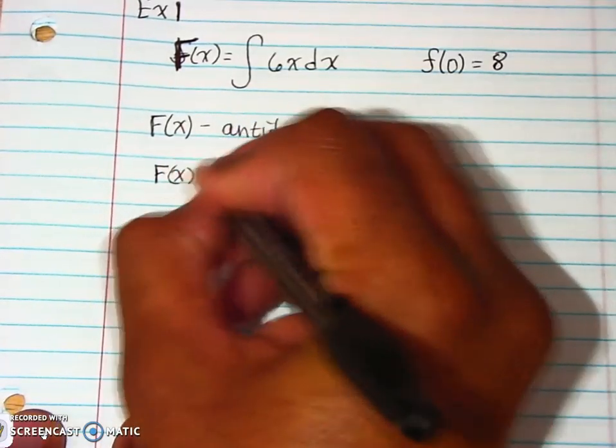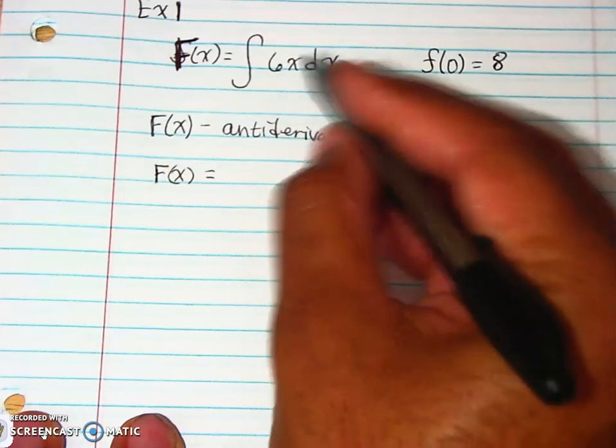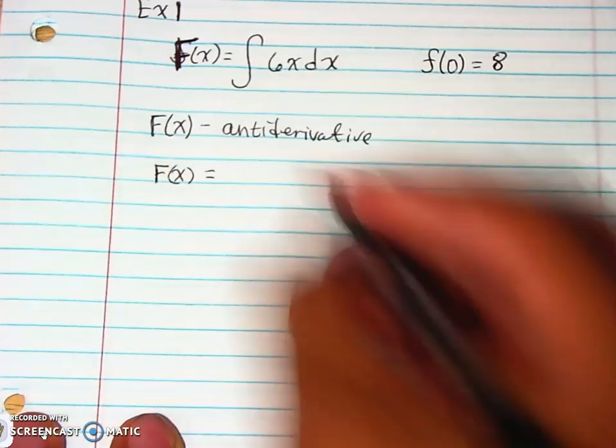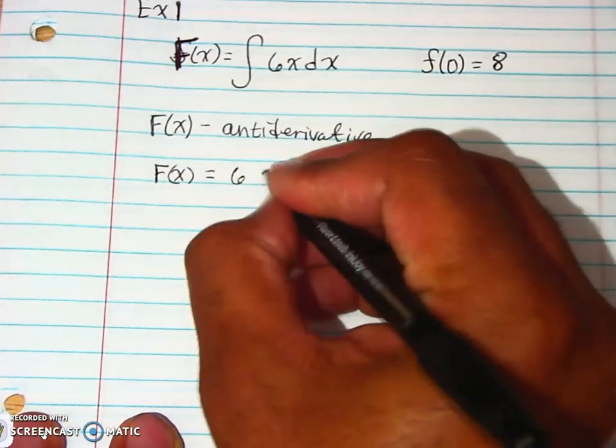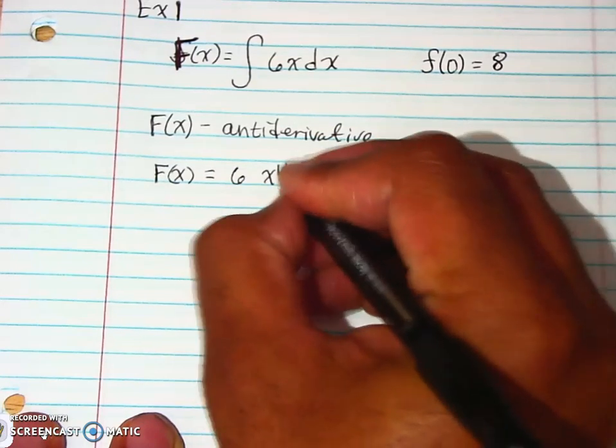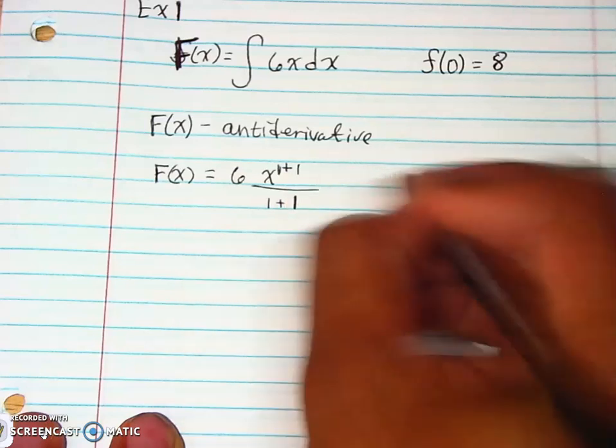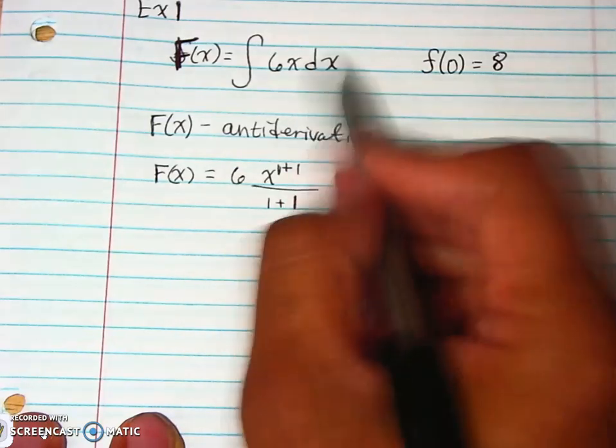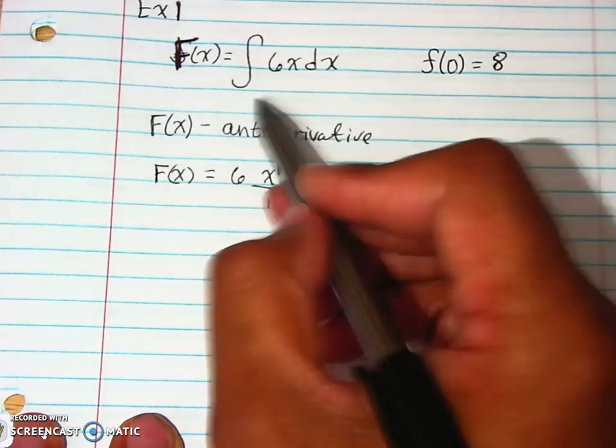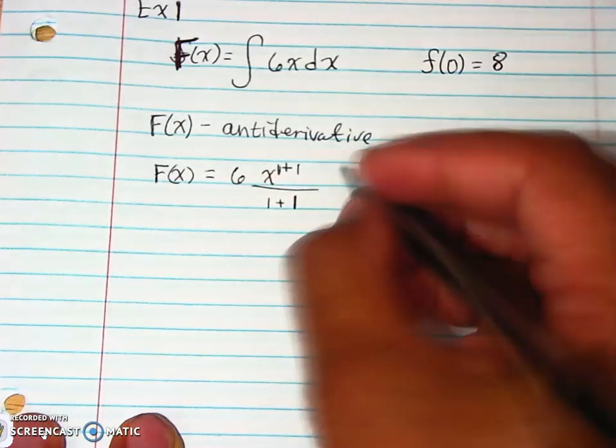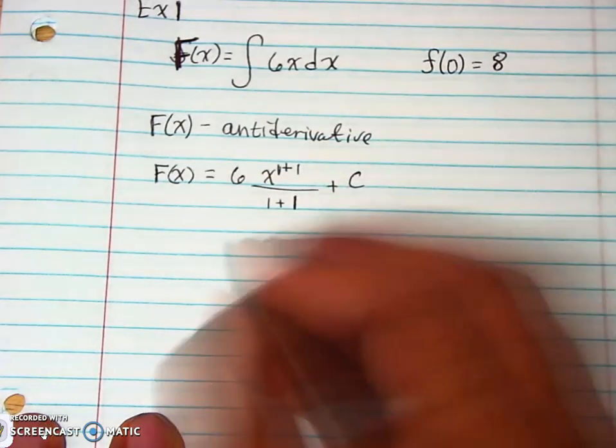All right. So let's go for that. Let's go for broke. All right. So here we know we're going to add one to the exponent, divide by that. So we have 6, add one to the exponent, 1 plus 1. And then we add one here. And then, again, because we don't know what the actual value is, we don't have an A or B as an indefinite integral. We're going to do the plus C back here.